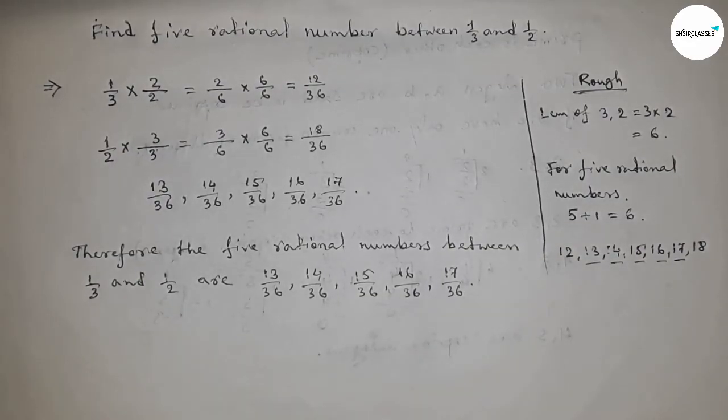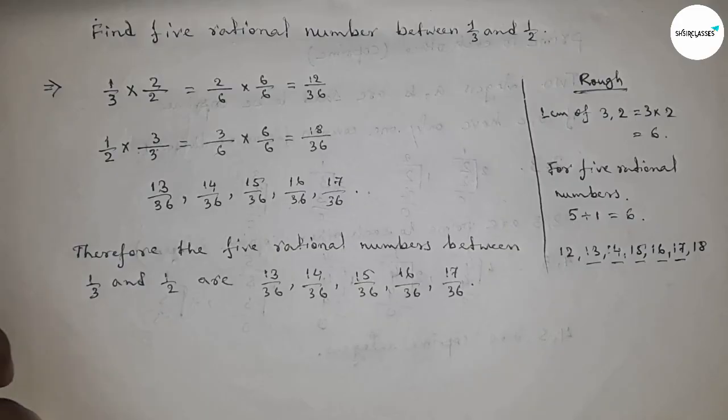So this is the process to find out five rational numbers between one upon three and one upon two. That's all, thanks for watching. Please subscribe, like, and comment.